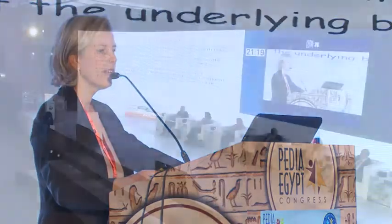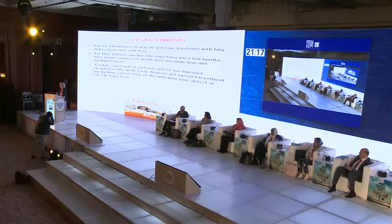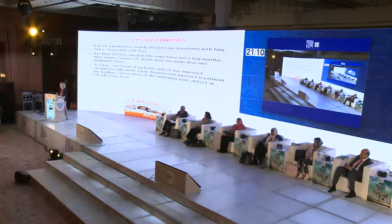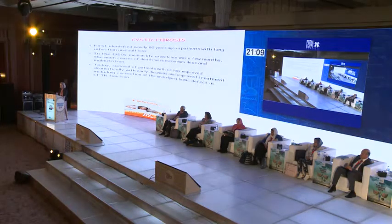Cystic Fibrosis was first identified nearly 80 years ago in patients with recurrent pneumonia and salt loss. In the 1950s, the median life expectancy of those patients was just a few months, and the main causes of that were meconium ileus and malnutrition. However, today the survival of patients with CF has improved dramatically because of early diagnosis and improved treatments.